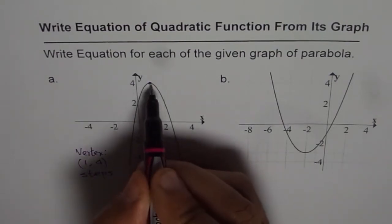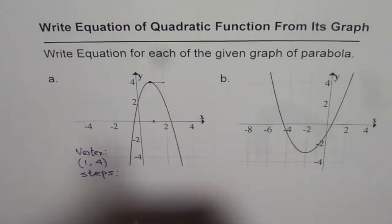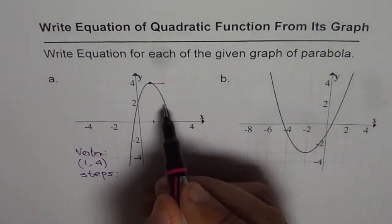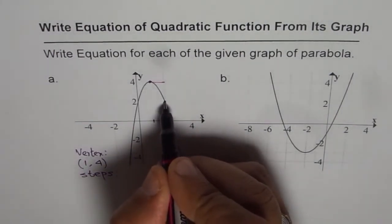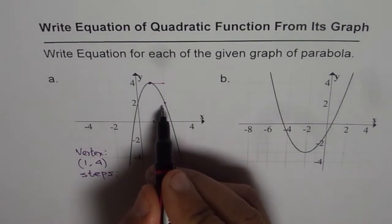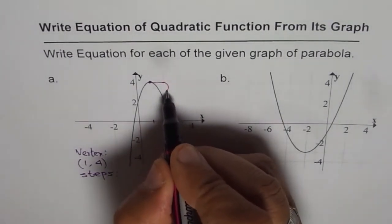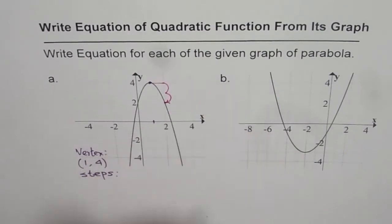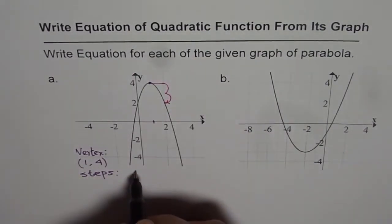I mean that if I move one step away from the vertex, then to get to the next point, how much up or down do I go? So the next point for that step is here. So we go 1, 2 steps. So the steps are 2.